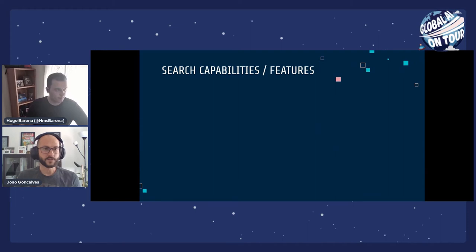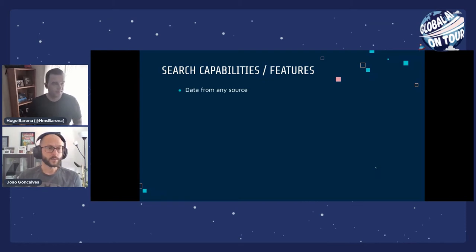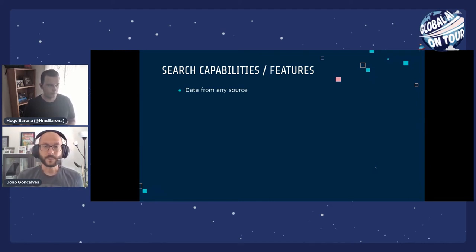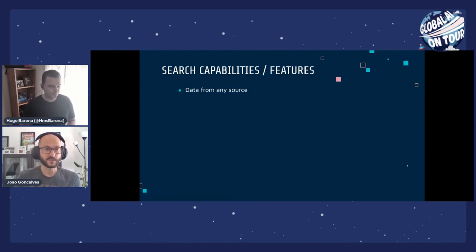Moving on to the capabilities of Azure Cognitive Search. For data sources, the service currently supports Azure Blobs, Azure Data Lake, Azure SQL, Table Storage, and Cosmos DB. It now also uses managed identities, so we can connect to these data sources in a secure way, avoiding the use of connection strings.